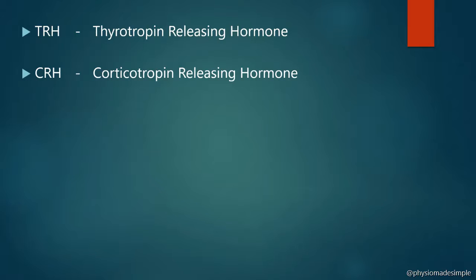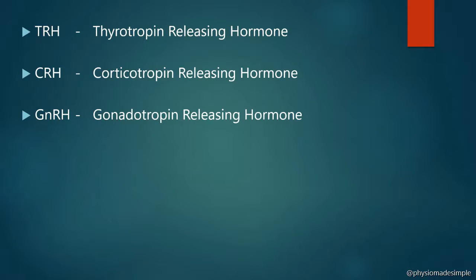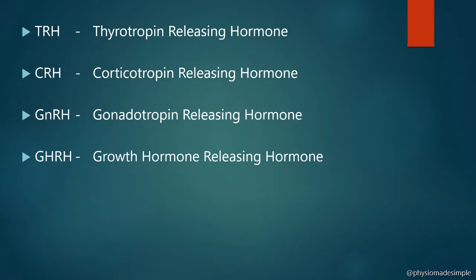The anterior pituitary releases FSH and LH — two gonadotropic hormones. Then comes GHRH — Growth Hormone Releasing Hormone — released by the hypothalamus. This stimulates the anterior pituitary to release Growth Hormone into the blood, which promotes body growth.